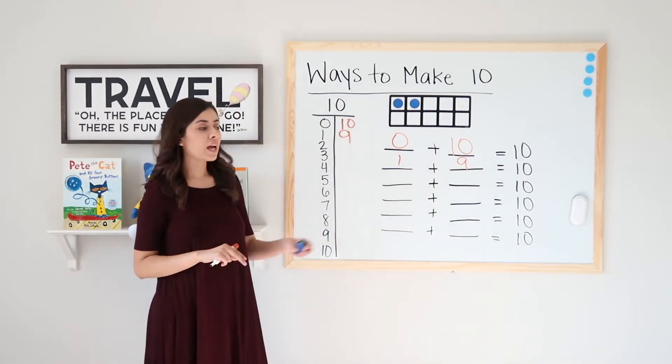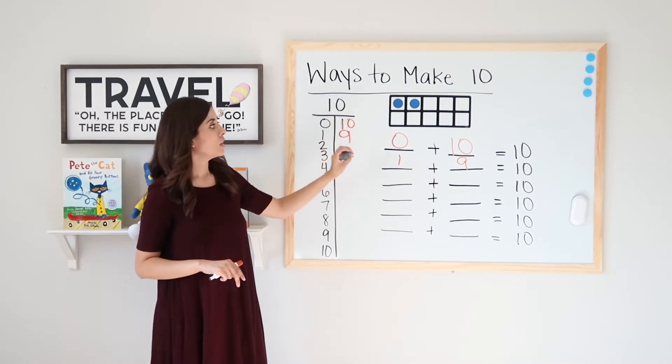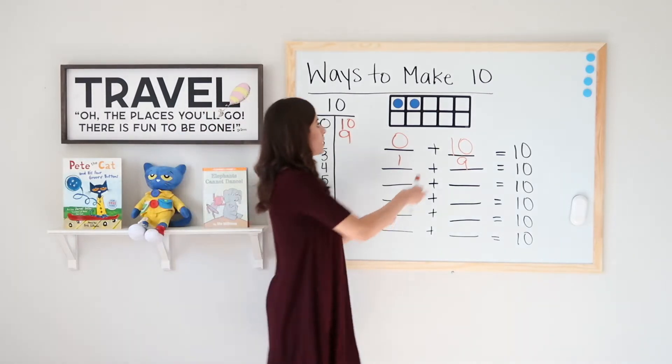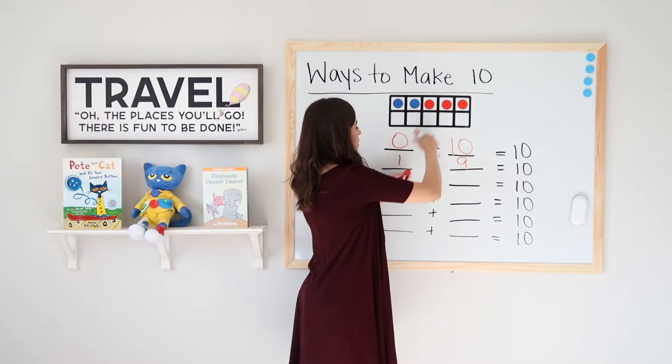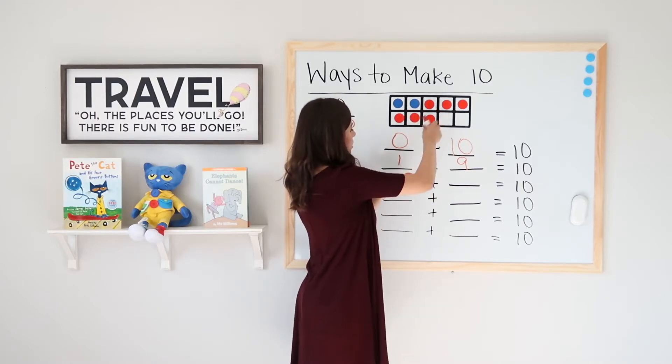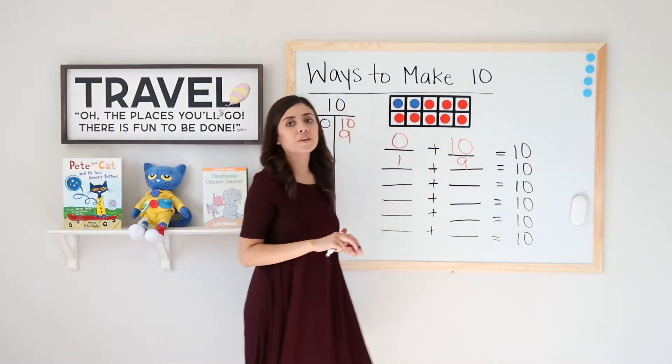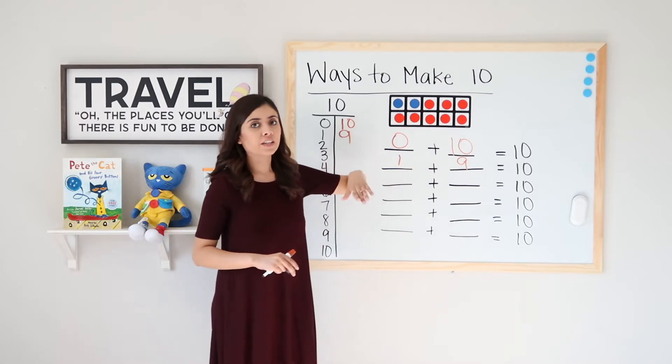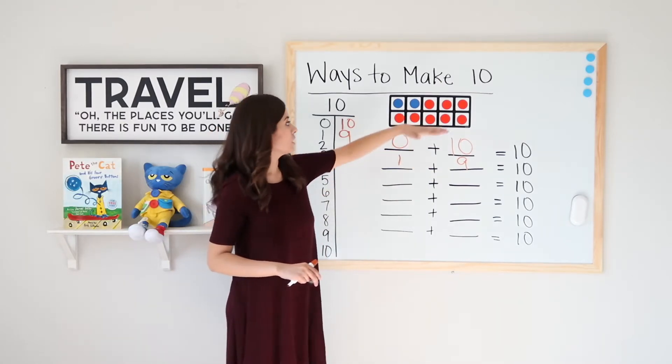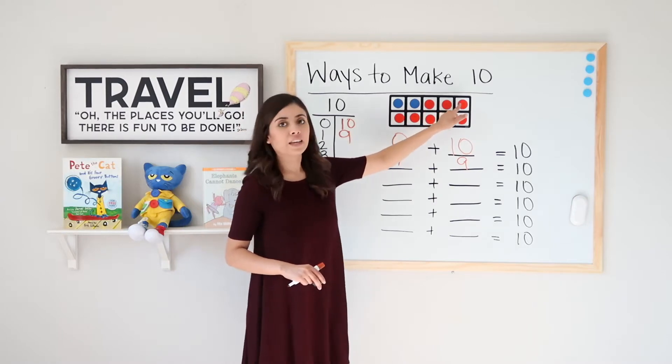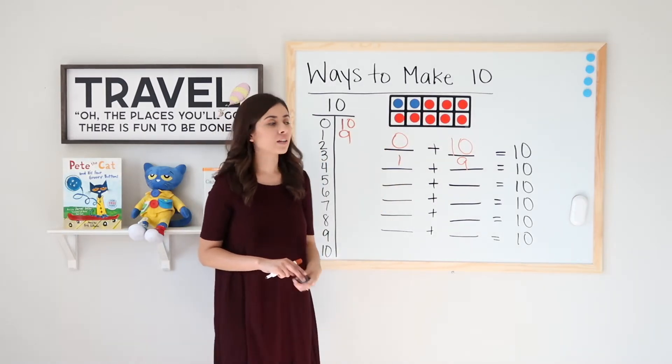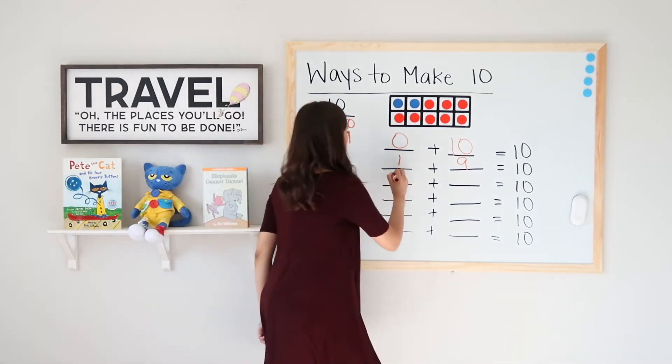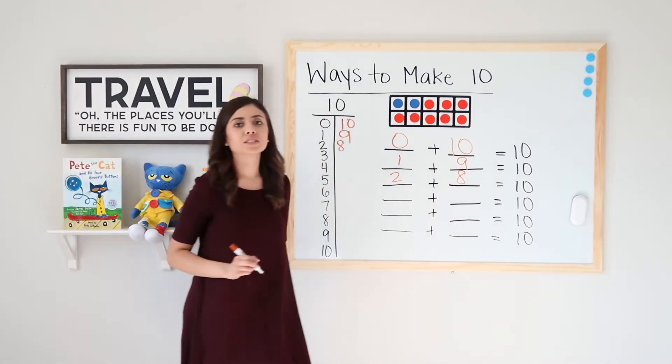Now I have 2 plus what equals 10? So I've already placed 2 blue dots in my 10 frame. Now how many red do I need? Let's go ahead and place our red. Remember that I said that the top has 5 and the bottom has 5, right? So really I can count up my red like this: 5, 6, 7, 8. I have 8 red. So that means that 2 plus 8 equals 10.